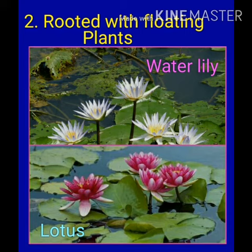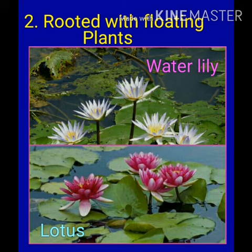Rooted with floating leaves. These plants have their roots fixed in mud or soil. They have long and hollow stems with broad leaves. Water lily, lotus, and chestnut are examples of rooted with floating leaves plants.